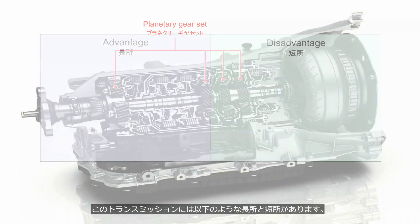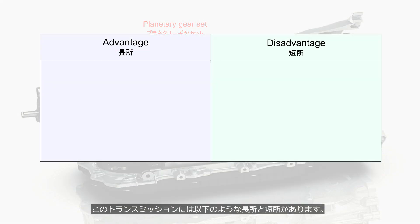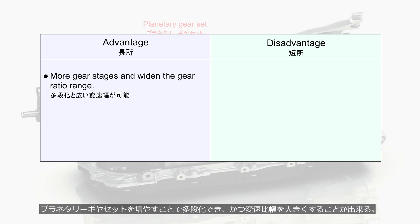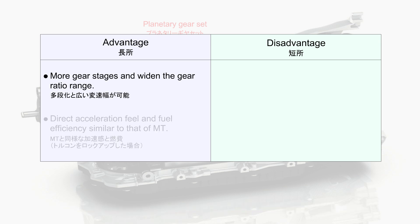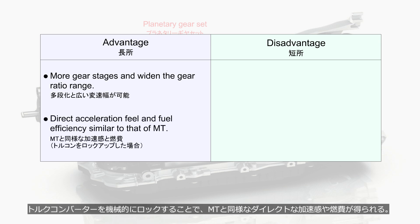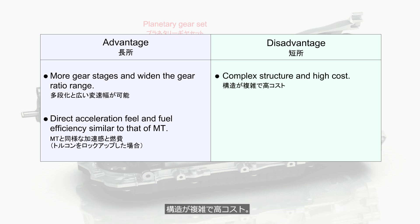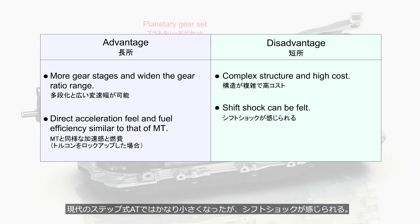This transmission has the following advantages and disadvantages. By increasing the number of planetary gear sets, it is possible to add more gear stages and widen the gear ratio range. By mechanically locking up the torque converter, a direct acceleration feel and fuel efficiency similar to that of a manual transmission are achieved. On the downside, it has a complex structure and high cost, and although significantly reduced in modern step-type automatic transmissions, shift shock can still be felt.